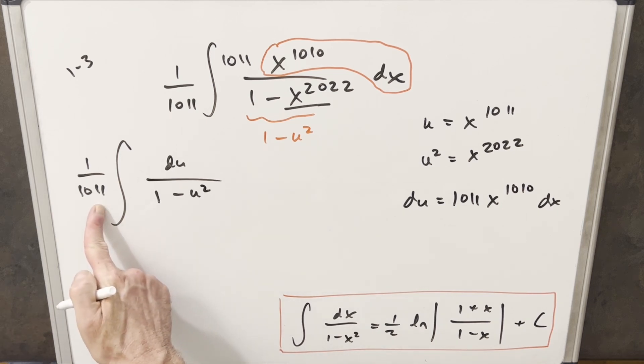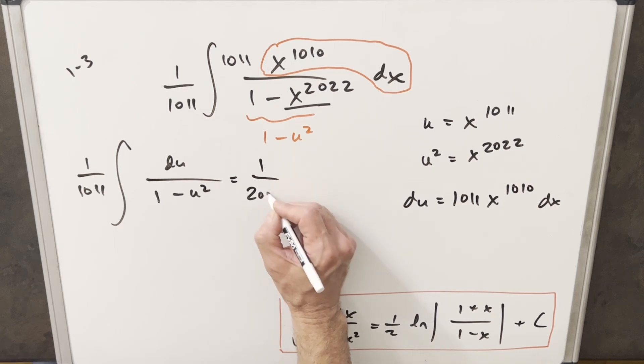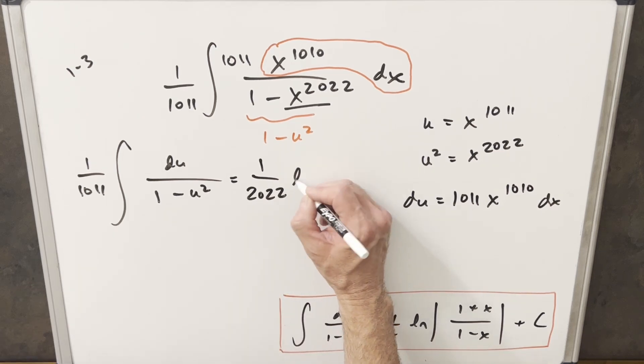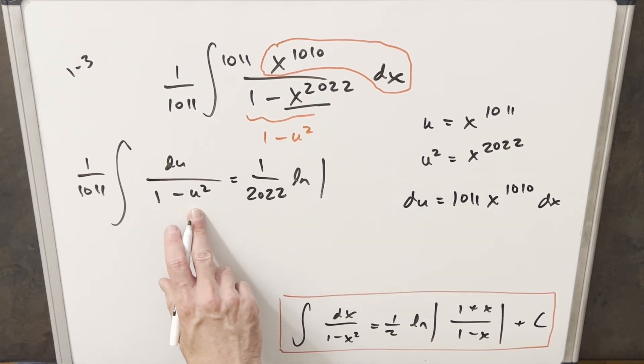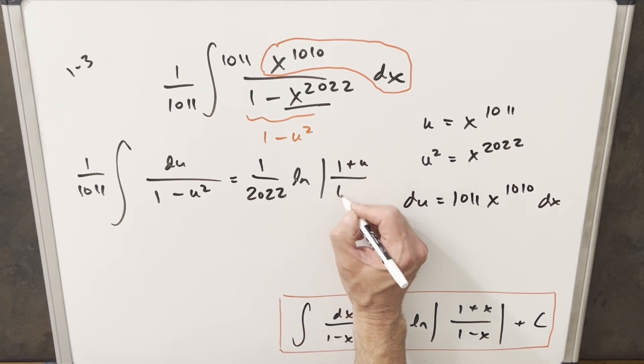So using this, I'm going to have 1 over 1011 times 1 half out front. So I'll just write that as 1 over 2022. And then we're going to have natural log. And of course, we have u instead of x in our formula. So we're going to have 1 plus u over 1 minus u.